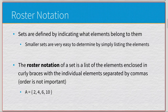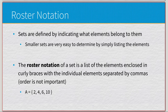A set is defined by indicating what elements belong to it. We may have sets A, B, C, each with various elements within them. One type of notation is roster notation: a list of elements enclosed in curly braces, with individual elements separated by commas. The order of elements is not important.